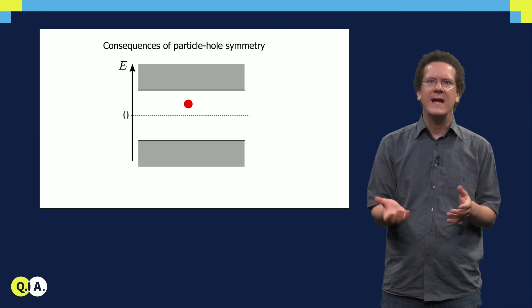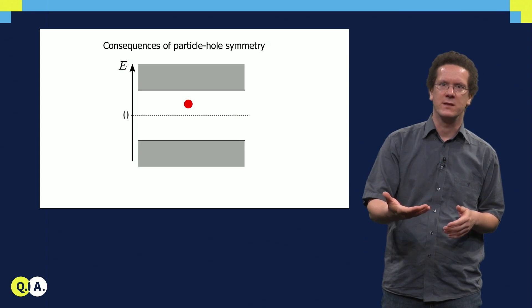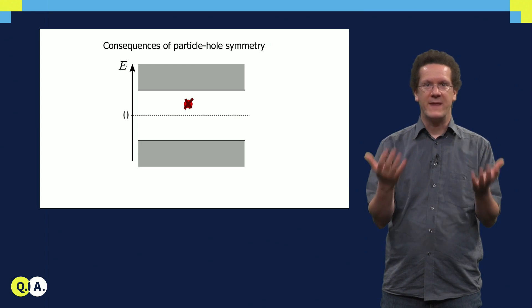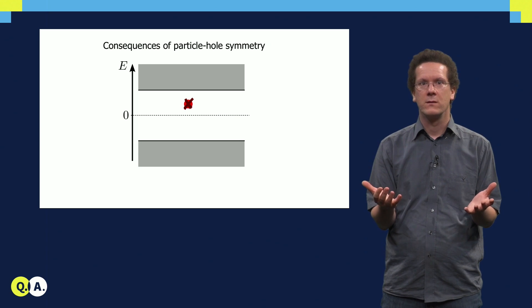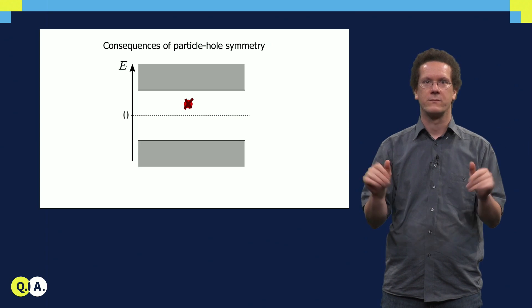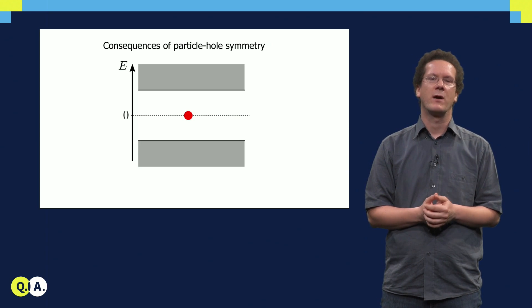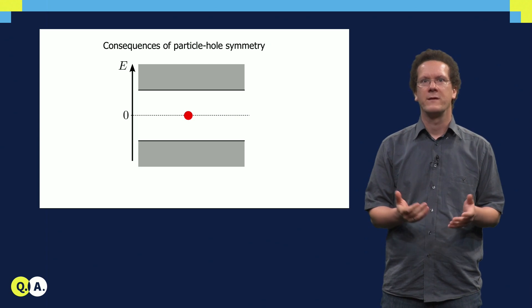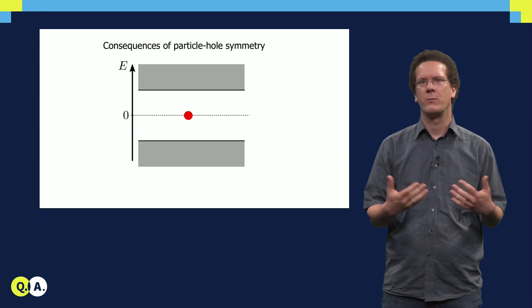If the Majorana state were to move away from zero energy, the system would not have particle-hole symmetry anymore. But that symmetry is fundamental, so this is not allowed. This way the particle-hole symmetry protects the Majorana bound states. We call these states symmetry-protected topological states.